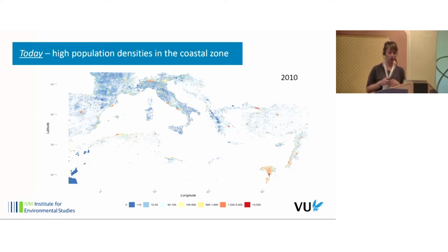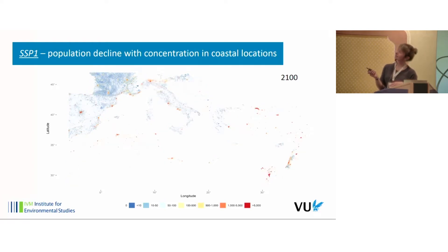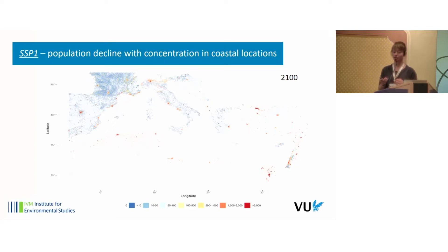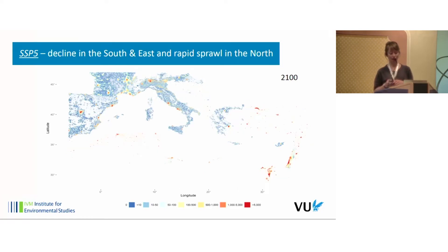Here is the population distribution for the year 2010, based on GHS-POP — you can see high population densities in the coastal zone. Under SSP1 in 2100, we see in general population decline and a high concentration of population in the coastal zone. Under SSP3, we see rapid urban sprawl in the south and east, mainly driven by rapid population growth, and population decline in the northern part of the region. Under SSP5, you see basically the exact opposite: decline in population in the south and east, and rapid sprawl and rapid population growth in the northern parts.